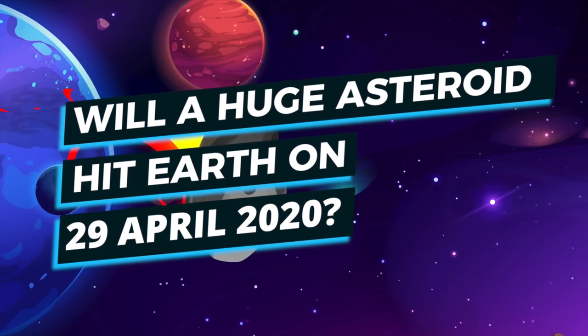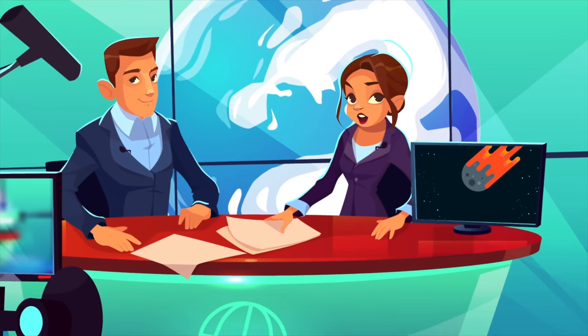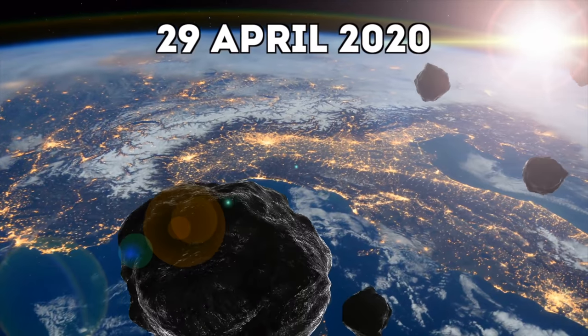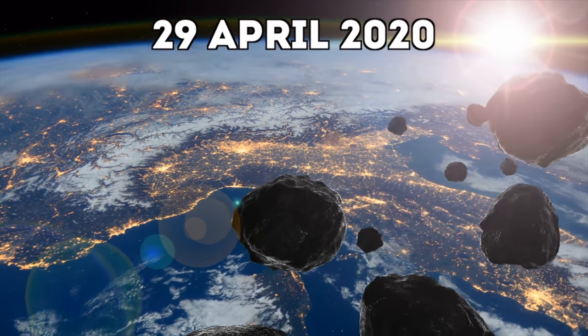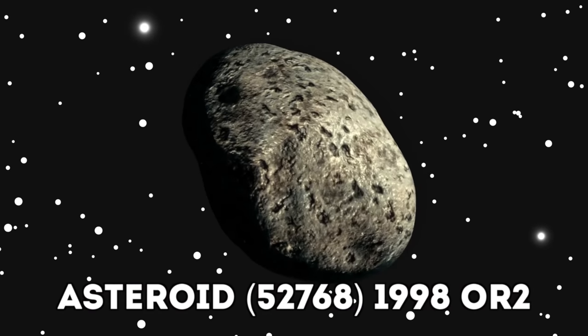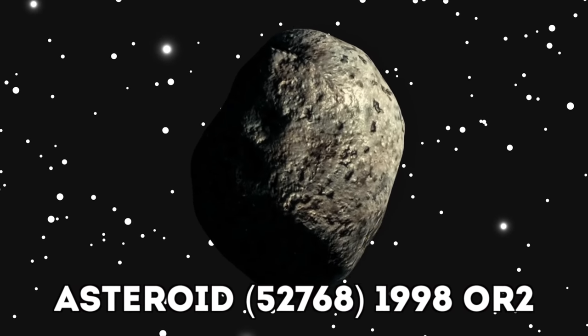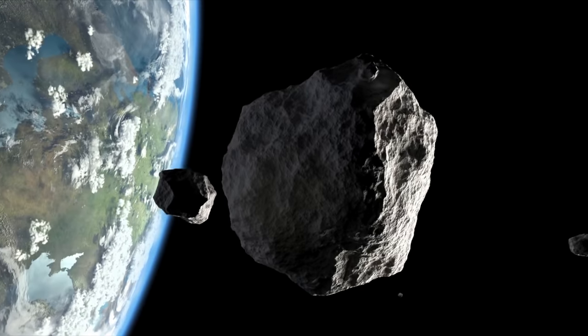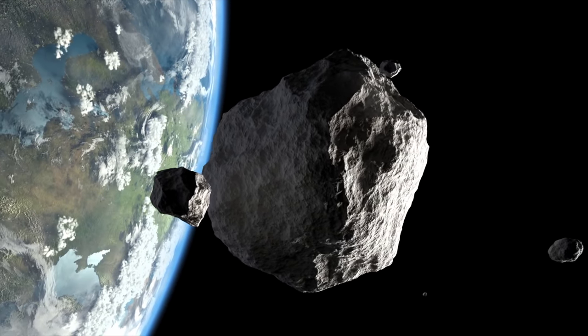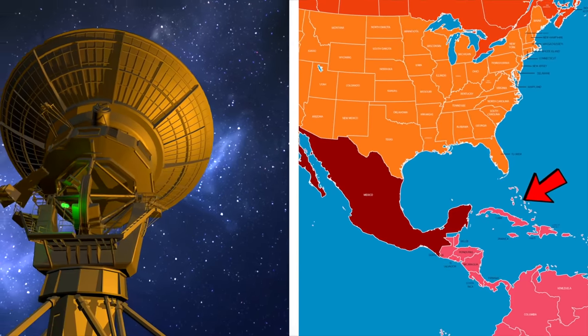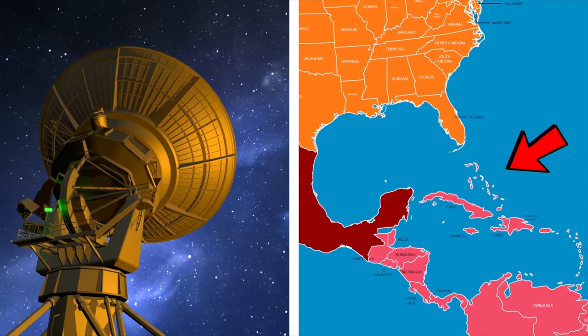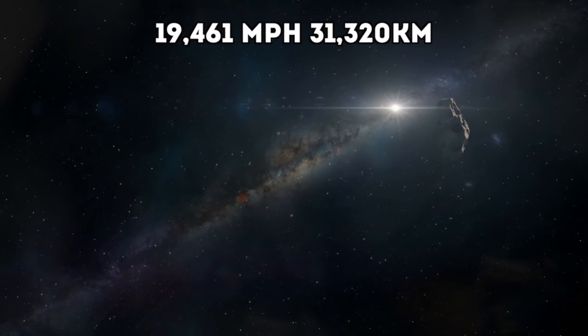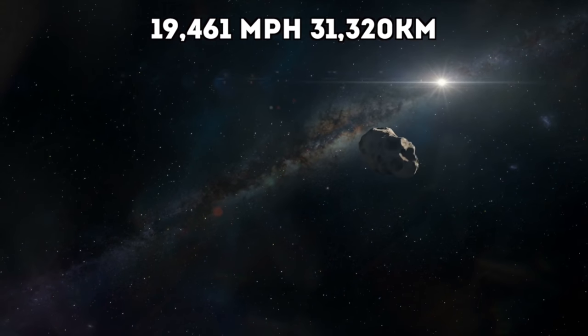Will a huge asteroid hit Earth on April 29th, 2020? By now you've likely seen news reports about this asteroid. On the 29th of April, it's going to pass incredibly close to Earth. The asteroid is called 52768 (1998 OR2), a catchy name I know. And it's actually the biggest asteroid to fly near Earth in years. It's been tracked by astronomers at the Arecibo Observatory in Puerto Rico since April 10th, and it's currently traveling through space at 19,461 miles per hour. That's 31,320 kilometers an hour.